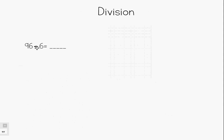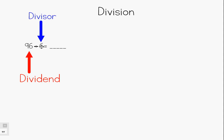Let's look at an example: 96 divided by 6. Let's review some vocabulary of division. 96 is known as the dividend — the dividend is what we are breaking apart. Here we are sharing 96 among 6 people, or making 6 groups out of 96 pieces. The 6 is known as the divisor — that is how many groups we are making out of our dividend. So in this case, we are making 6 groups out of 96.